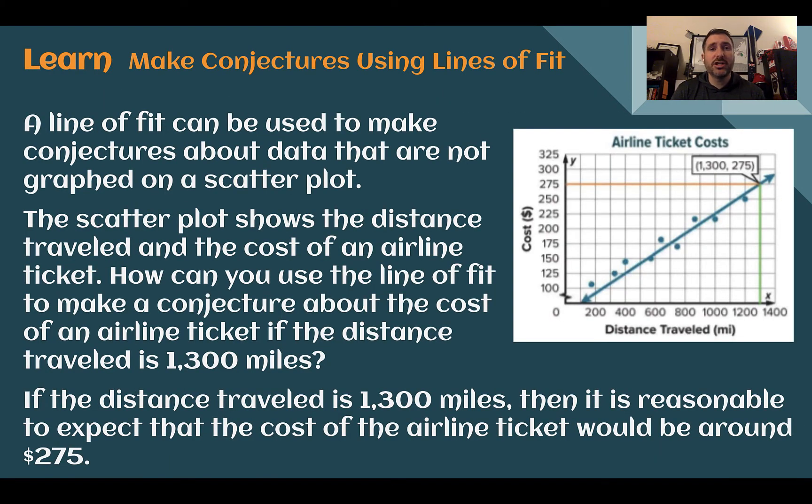Let's learn. Make conjectures using lines of fit. A line of fit can also be used to make conjectures about the data that are not graphed on the scatter plot. So here we can see a scatter plot showing the distance traveled as our x coordinate and the cost of the ticket for the airplane for our y value. If we create a line that goes through the points we're showing, how can we use that line of best fit to make a conjecture if they traveled 1300 miles?